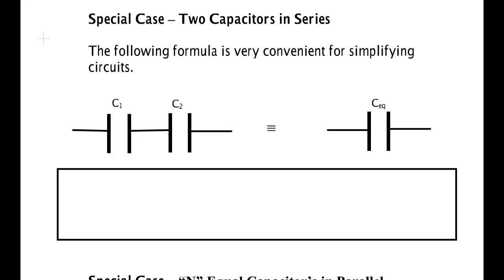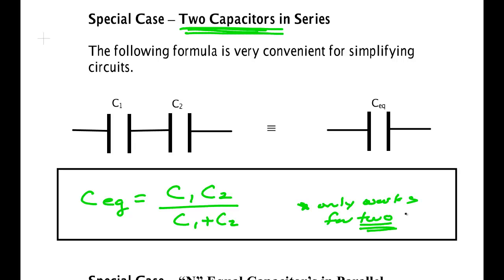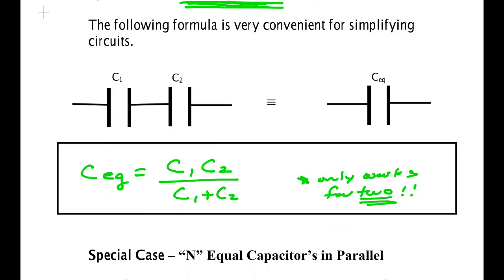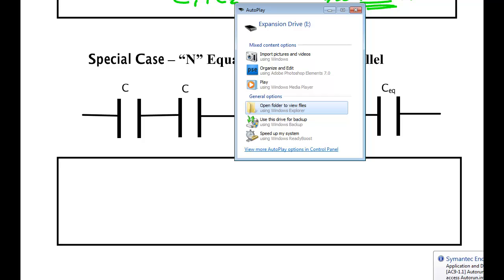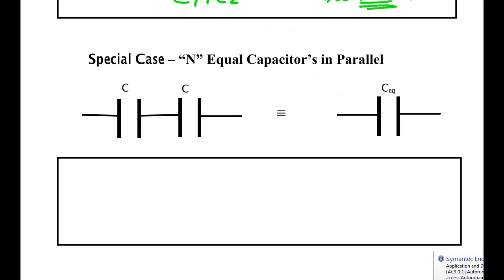Now there are some special cases that you should know because it will speed up your work. If you only have two capacitors in series, there is this useful formula that the equivalent capacitance is the product of the two capacitors divided by the sum. Only works for two in series but that happens so often it's a useful one to memorize, especially if you have a calculator where you can take inverses, because you probably don't want to work with fractions.